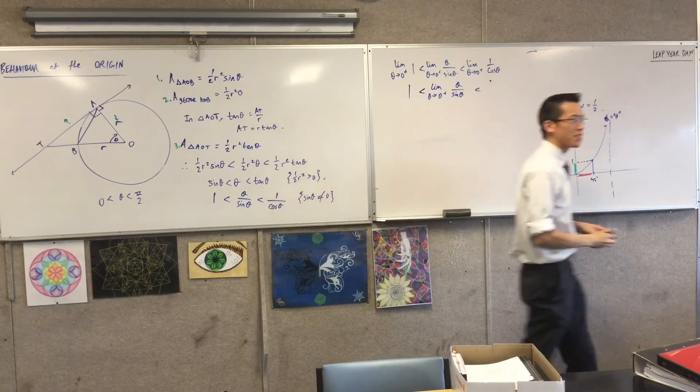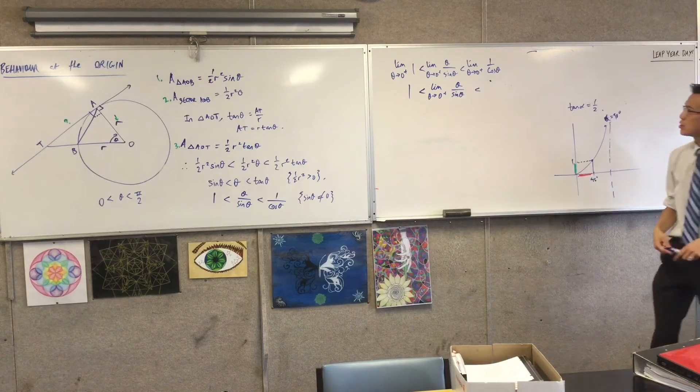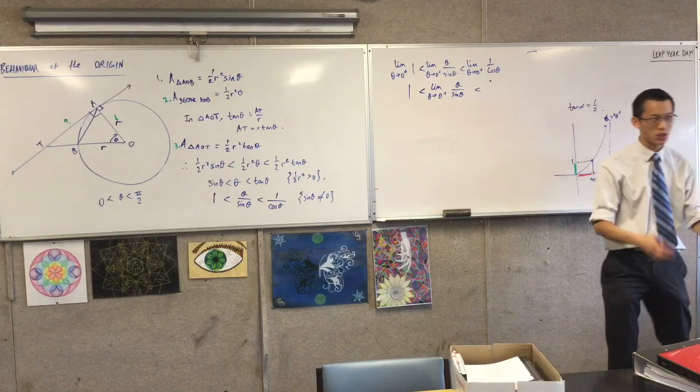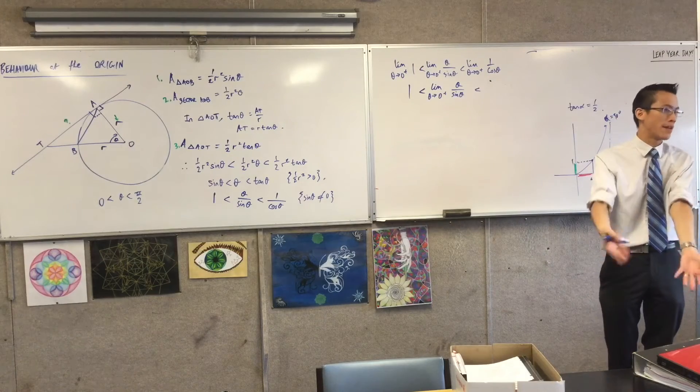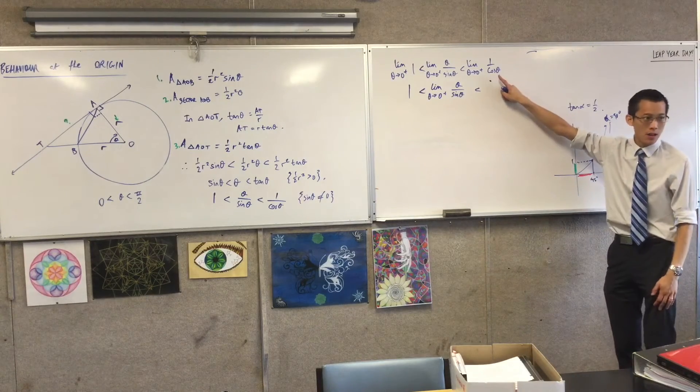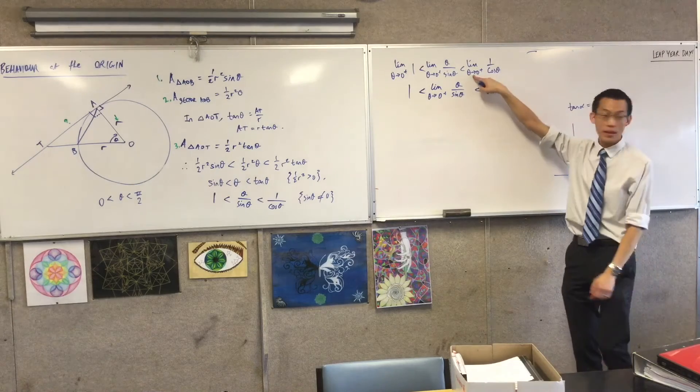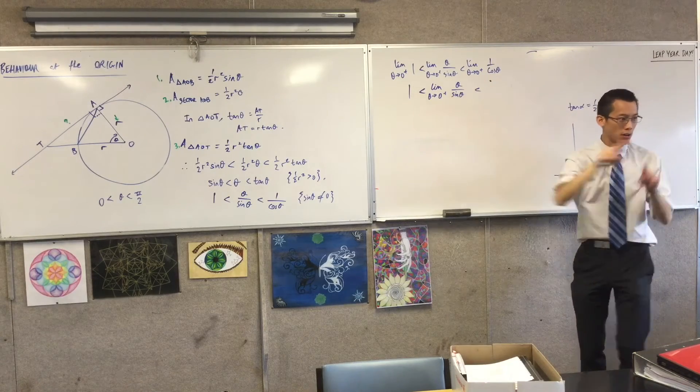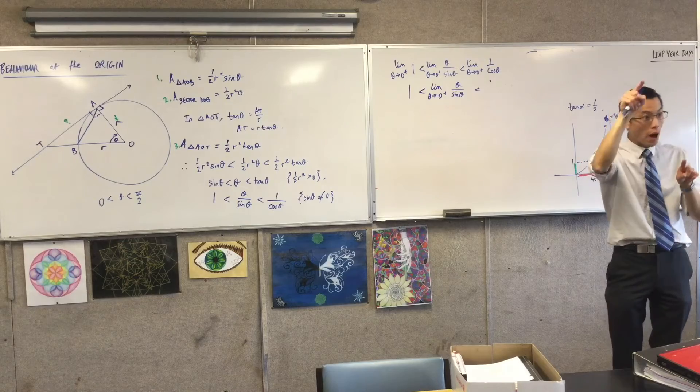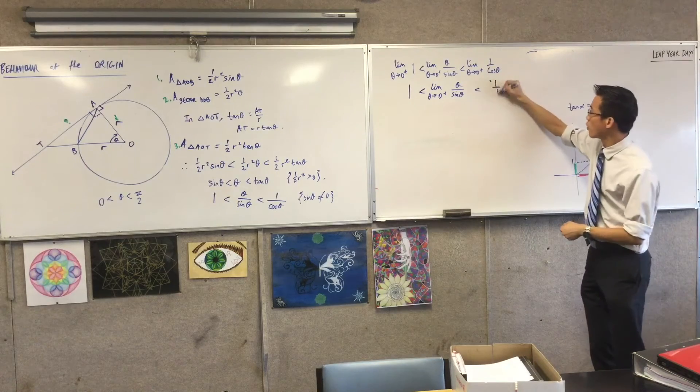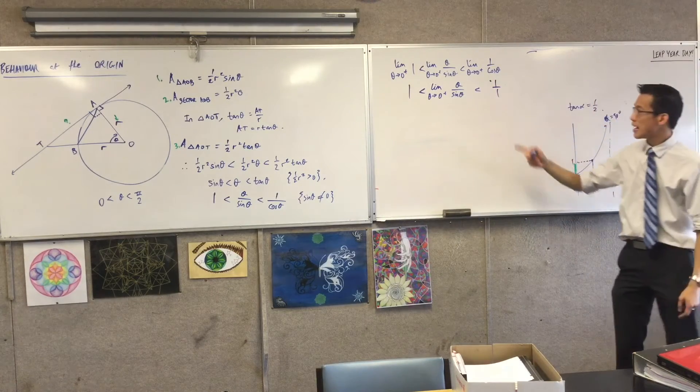Now have a look at the guy on the right. Usually we have issues with limits because you can't just evaluate theta at that value, right? But because here I have cos theta, cos theta is well-defined when theta equals zero. Cos theta is coming up to 1, right? So this guy is 1 over 1. It's just 1.